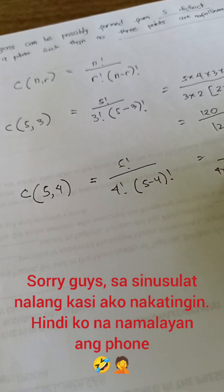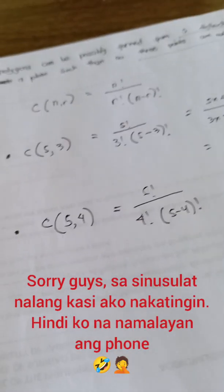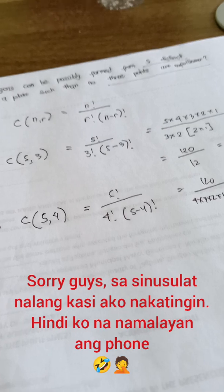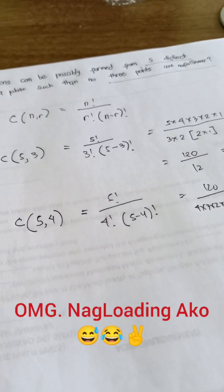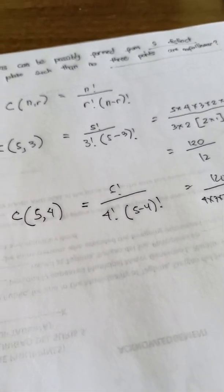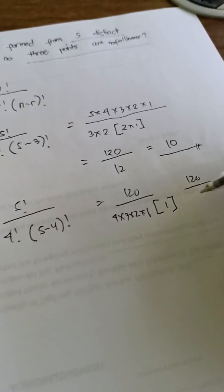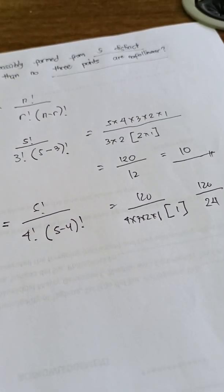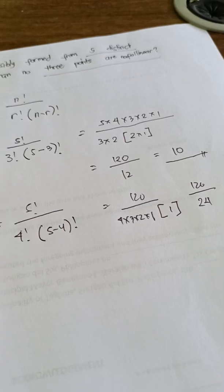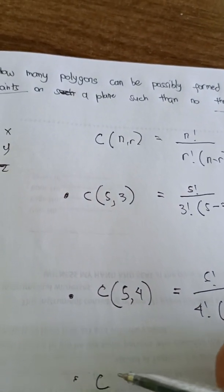So C(5,4) equals 5 factorial all over 4 factorial times (5-4) factorial. So again it's 120 all over, 4 factorial is 4 times 3 times 2 times 1, multiplied by 1. So 4 times 3 is 12, times 2 is 24. So meaning 120 divided by 24 equals 5.